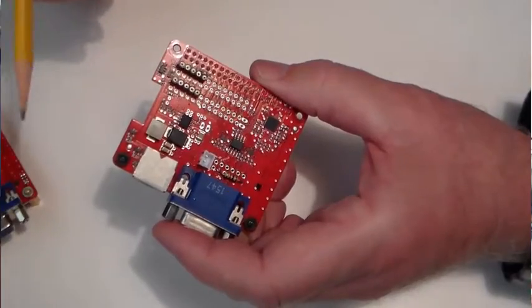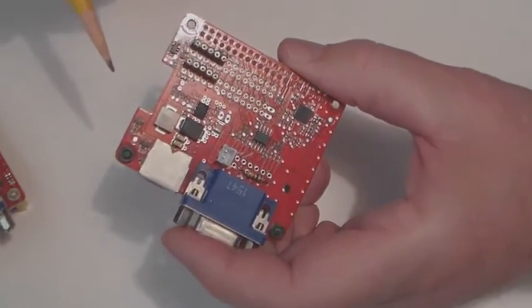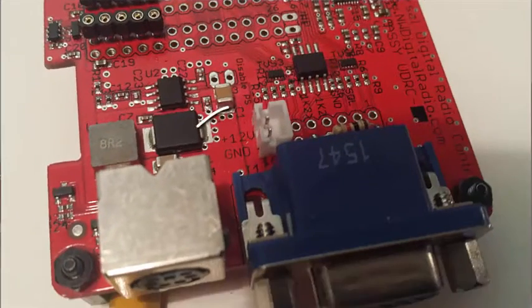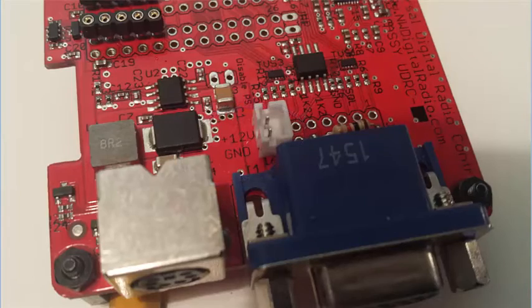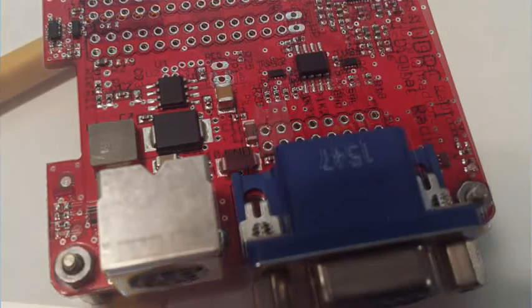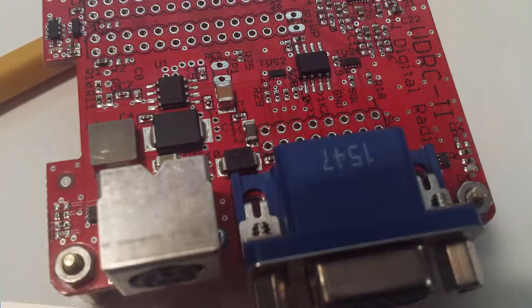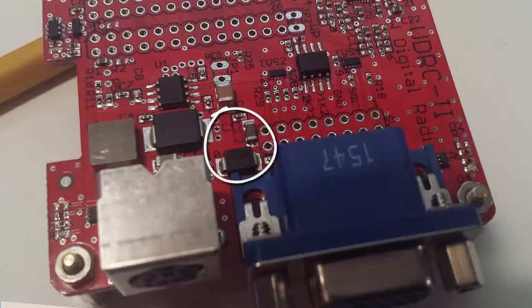Adding our power connector to the original UDRC is easy and straightforward. Take a look. The through holes that we want to connect to on the original board are well-labeled. You'll find them right here, plus 12 volts and ground. But now, look at the UDRC 2. Not only are the labels no longer there, but additional components have been added right next to our through holes.